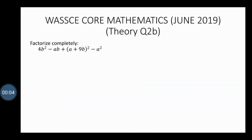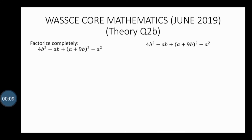Part b: Factorize completely 4b² minus ab plus (a + 9b)² minus a². We have 4b² minus ab plus (a + 9b)² minus a². First, we expand the bracket (a + 9b)²: multiplying (a + 9b) by (a + 9b), we now have 4b² minus ab plus (a + 9b)(a + 9b) minus a².